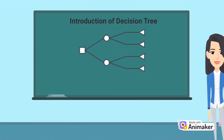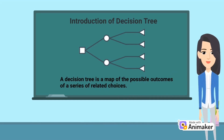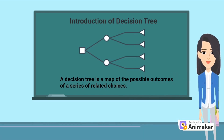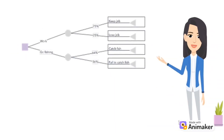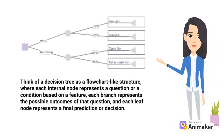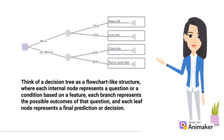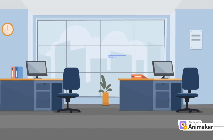A decision tree is a popular and intuitive machine learning algorithm used for both classification and regression tasks. It makes decisions or predictions based on a series of questions or conditions about the input features. Think of a decision tree as a flowchart-like structure where each internal node represents a question or condition based on a feature, each branch represents the possible outcomes of the question, and each leaf node represents a final prediction or decision.